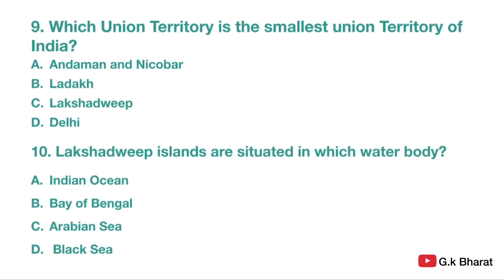Next. Which is the smallest union territory of India? Option A: Andaman and Nicobar. Option B: Ladakh. Option C: Lakshadweep. Option D: Delhi. Your correct answer is option C — Lakshadweep. Lakshadweep is the smallest union territory of India.